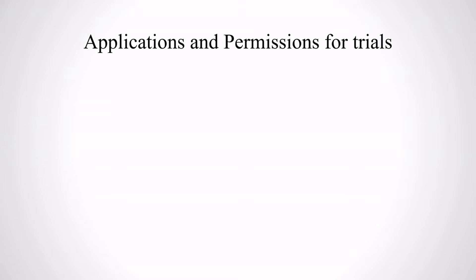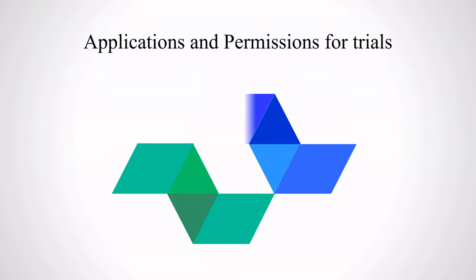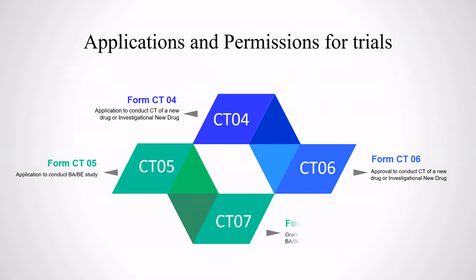There are very specific application forms for permissions to conduct clinical trials. Two of the important forms are Form CT-04 and Form CT-06. Form CT-04 is the application to conduct a clinical trial for a new drug or the investigational new drug. The approval or permission to conduct that clinical trial for the new drug is granted in Form CT-06. So you apply using Form CT-04 and you get approval in the form of CT-06.